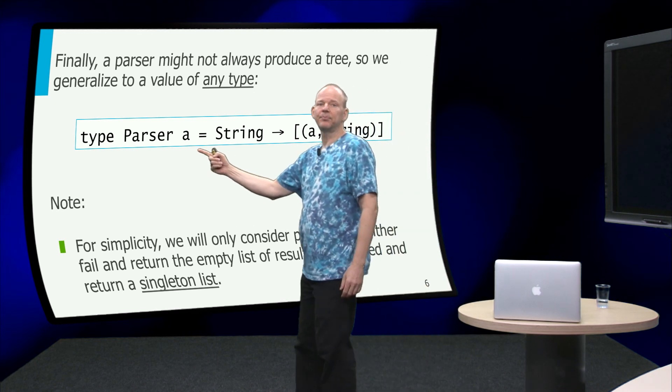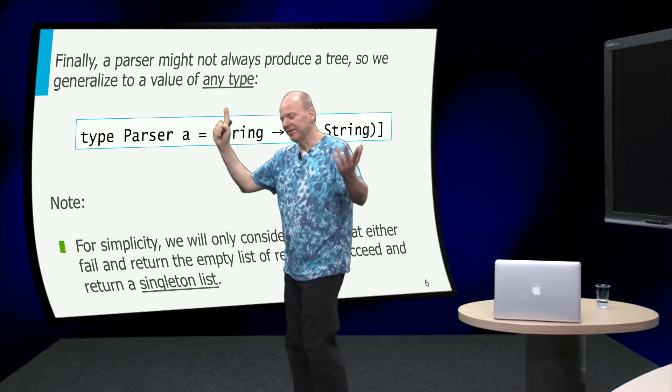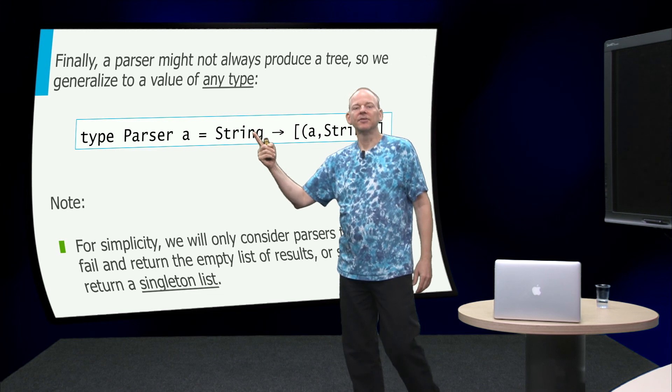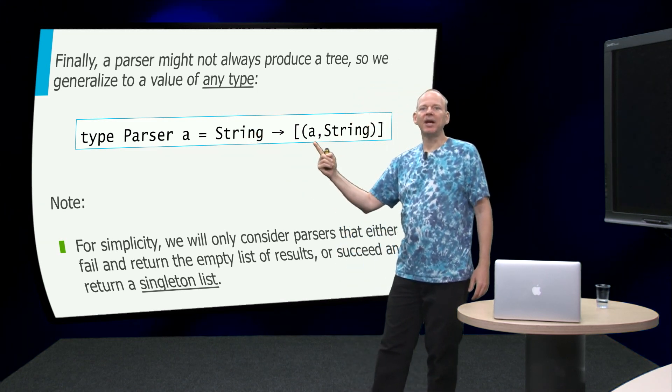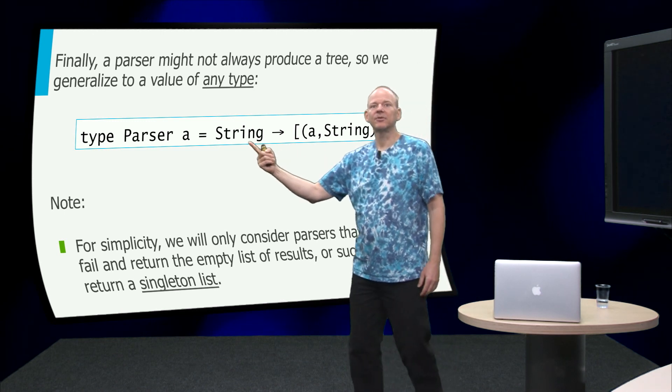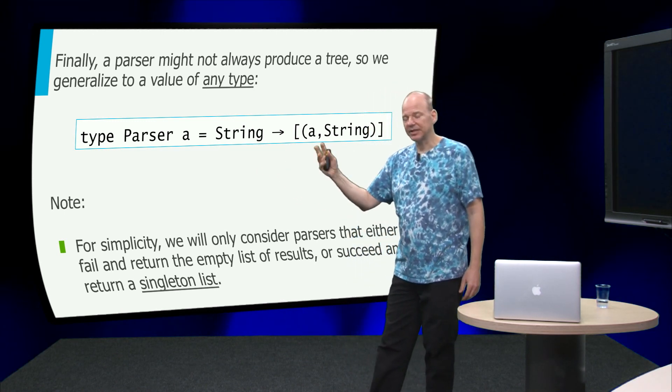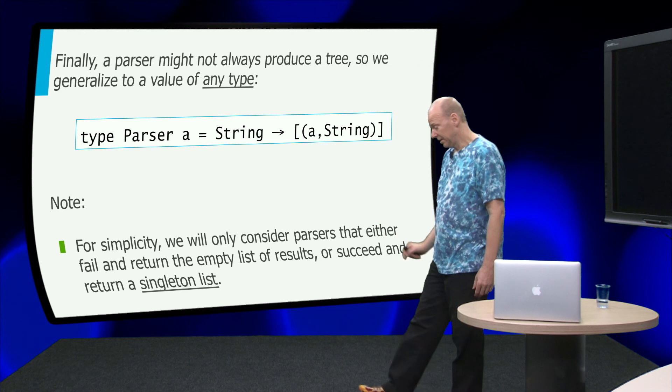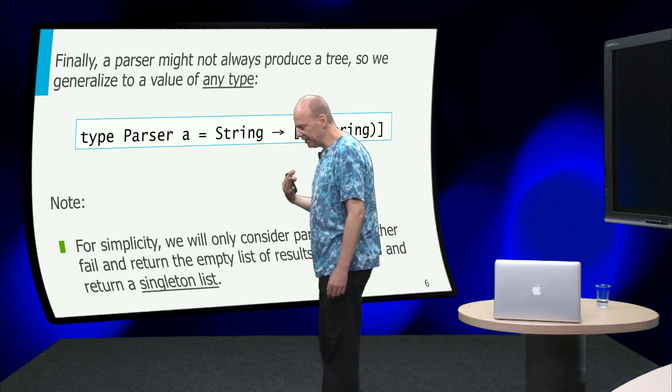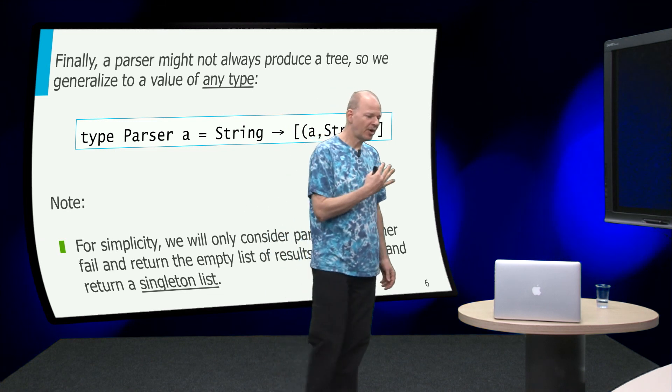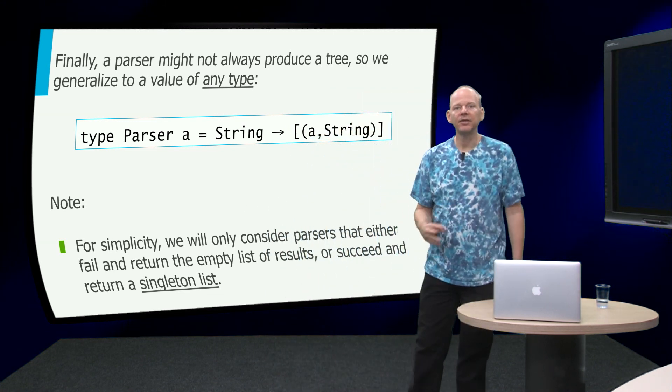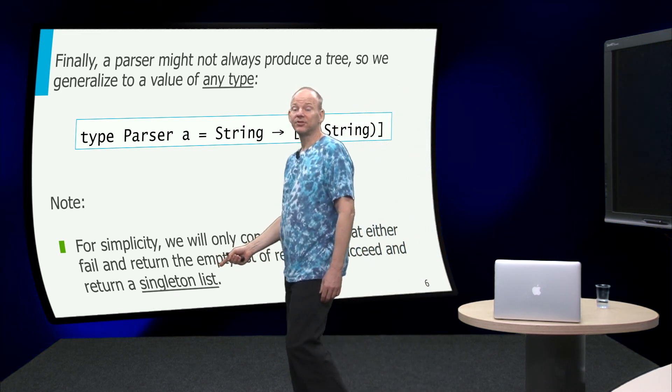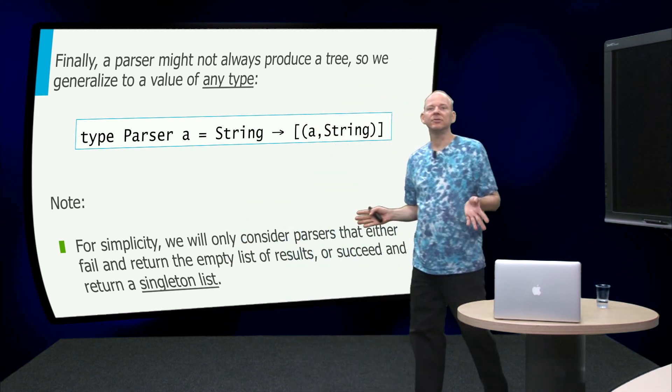So now the next thing is that really it doesn't matter whether we want to return a tree or not, so we are going to parameterize the type parser over a. And a can be tree, it can be whatever, we don't care. So, the final type of parser takes a string and returns a list of pairs of A, that is the value that we are trying to extract from the string, and the rest of the string that we don't use. And in this case, as I mentioned, we are going to keep things really simple and we are going to only consider parsers that either succeed with a single value or fail with an empty value. So this list, if the parse succeeds, will always be a singleton list, but we are not going to use the maybe type.